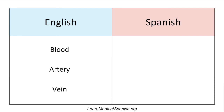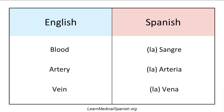Blood — la sangre. Artery — la arteria. Vein. And for bonus points, how do you make that plural? Las venas.